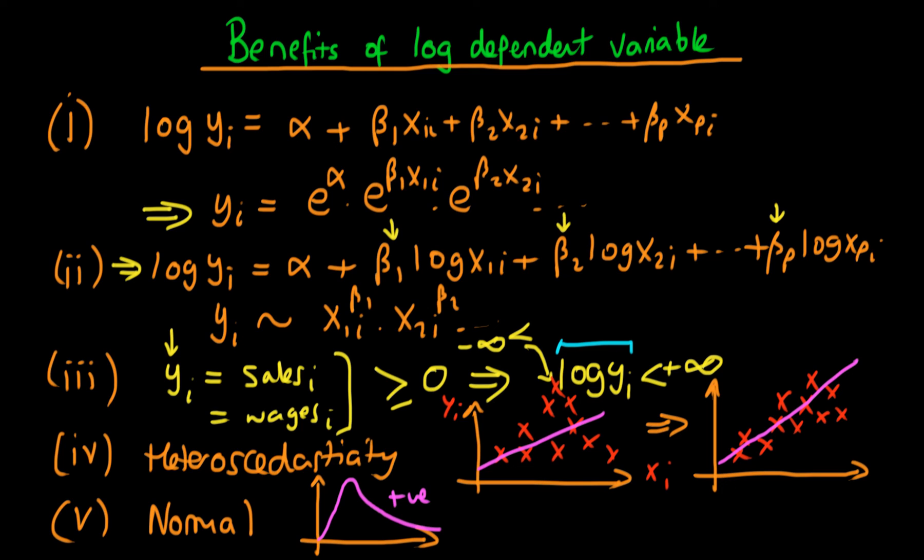By taking the log we are suppressing each of these variations. So essentially we're making our distribution more symmetric. So perhaps when we're taking the log of the dependent variable it might look something more like that. It will still have a bit of positive skew but we have made our data much more normal than it was previously.